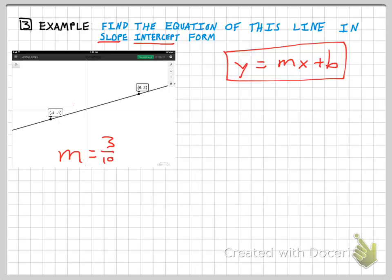In this formula, m again represents slope and b represents the y-intercept on the graph—that's the point where the line crosses the y-axis. All right, so for this one I'm going to do y equals three-tenths x plus b.